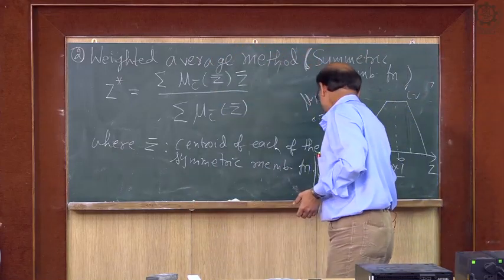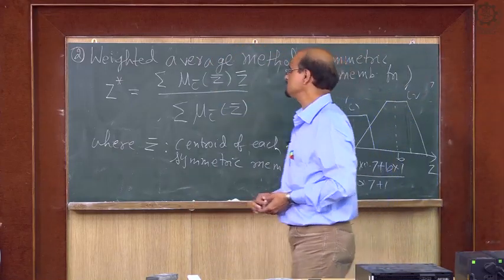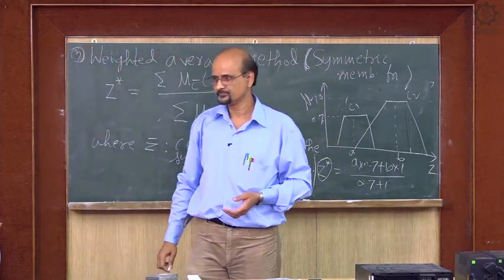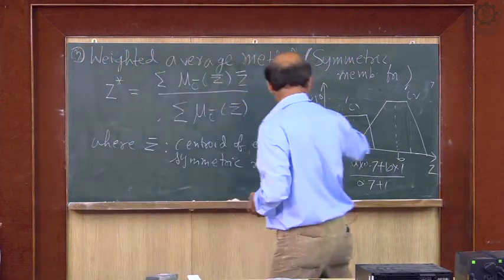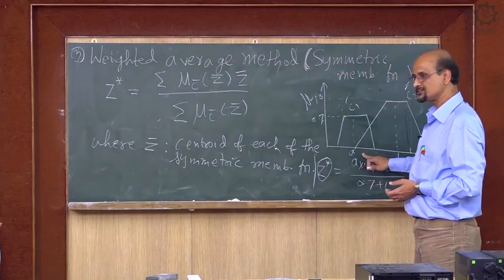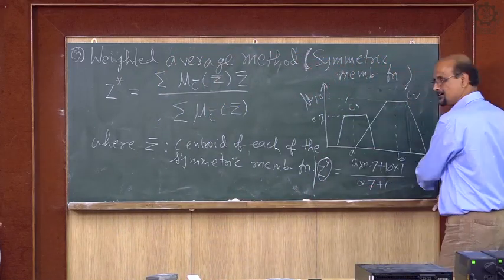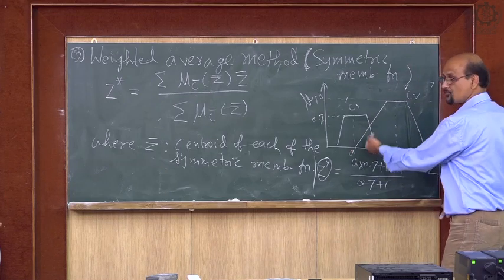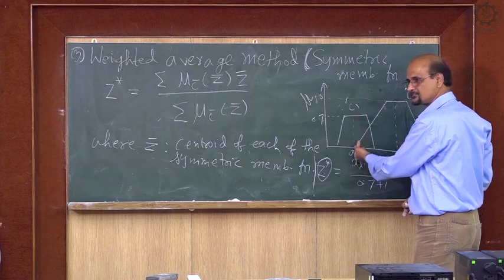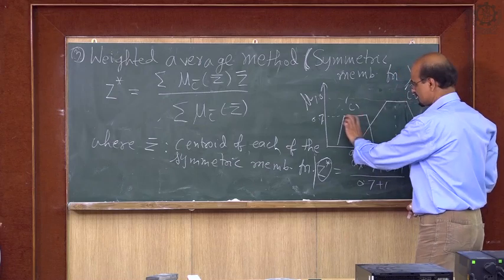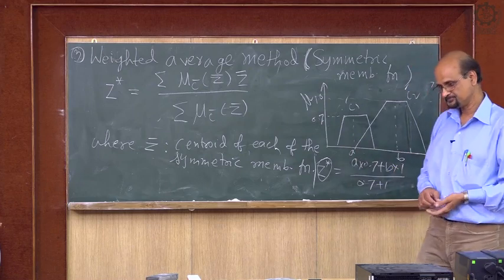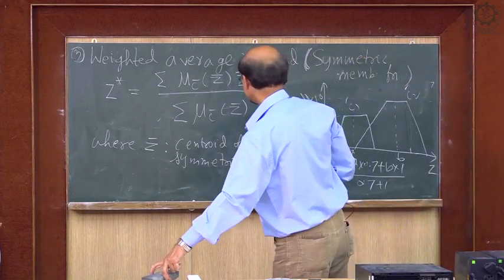Again you are getting one defuzzified point. Z-bar is the center of each fuzzy set. I wrote centroid of each symmetric membership function. So 'a' into its membership value plus 'b' into its membership value, divided by the addition of those membership values. If the center is not obvious, it is the midpoint of your fuzzy set, depending on your membership function.